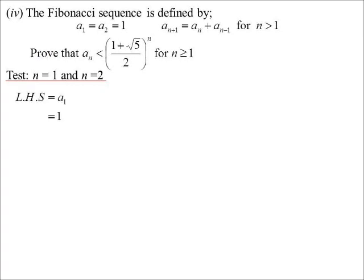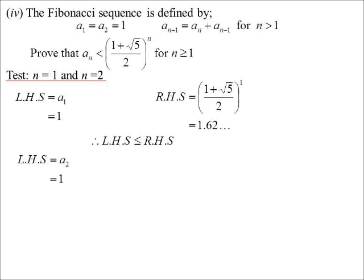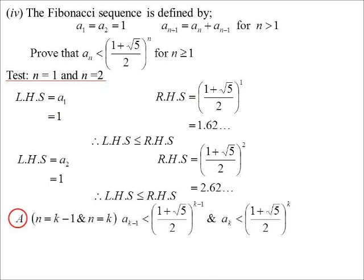So a1 is equal to 1, and 1 is less than the golden ratio, 1 plus root 5 on 2 to the power of 1. a2, but now squared, well squared it actually gets bigger, so it's 2.62. So again, it is less than. So it works okay for the first two terms. So we're now going to assume for both k minus 1 and k as well. Because I'm going to have to substitute that into the formula they've given us. And so we're going to prove k plus 1.